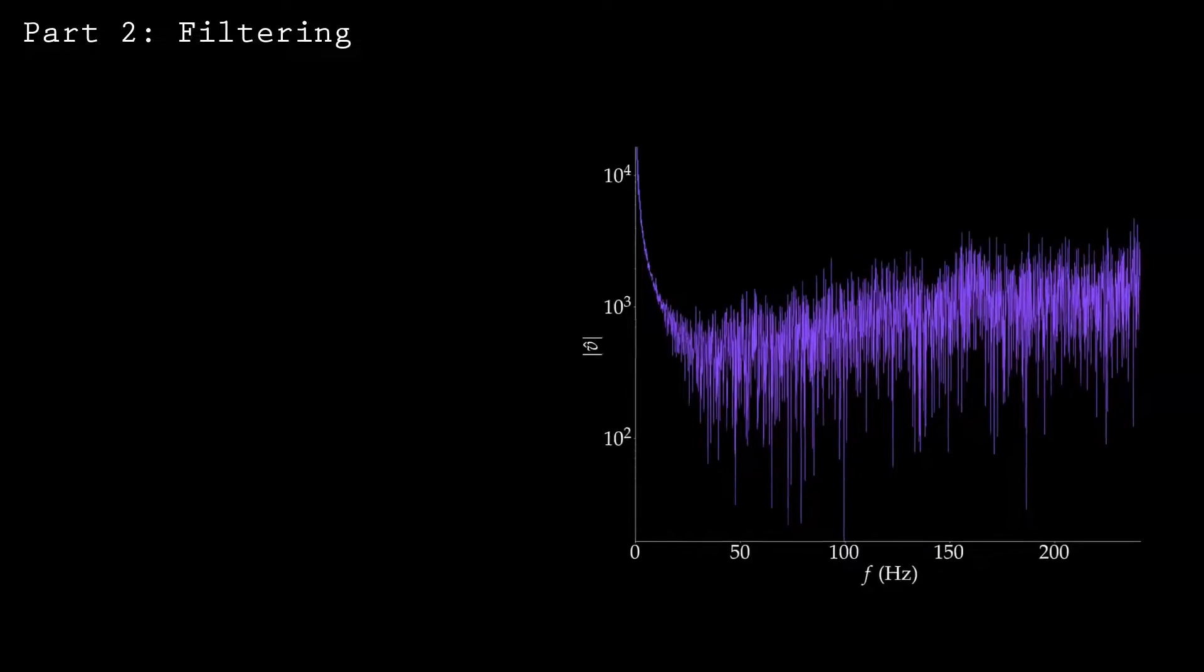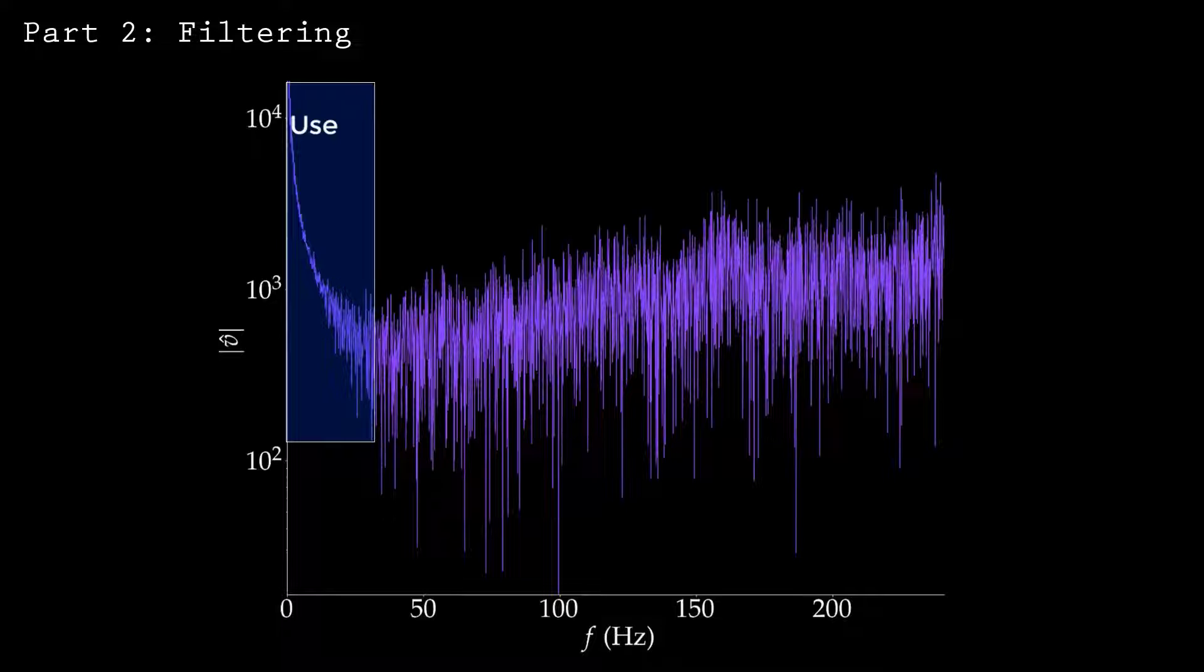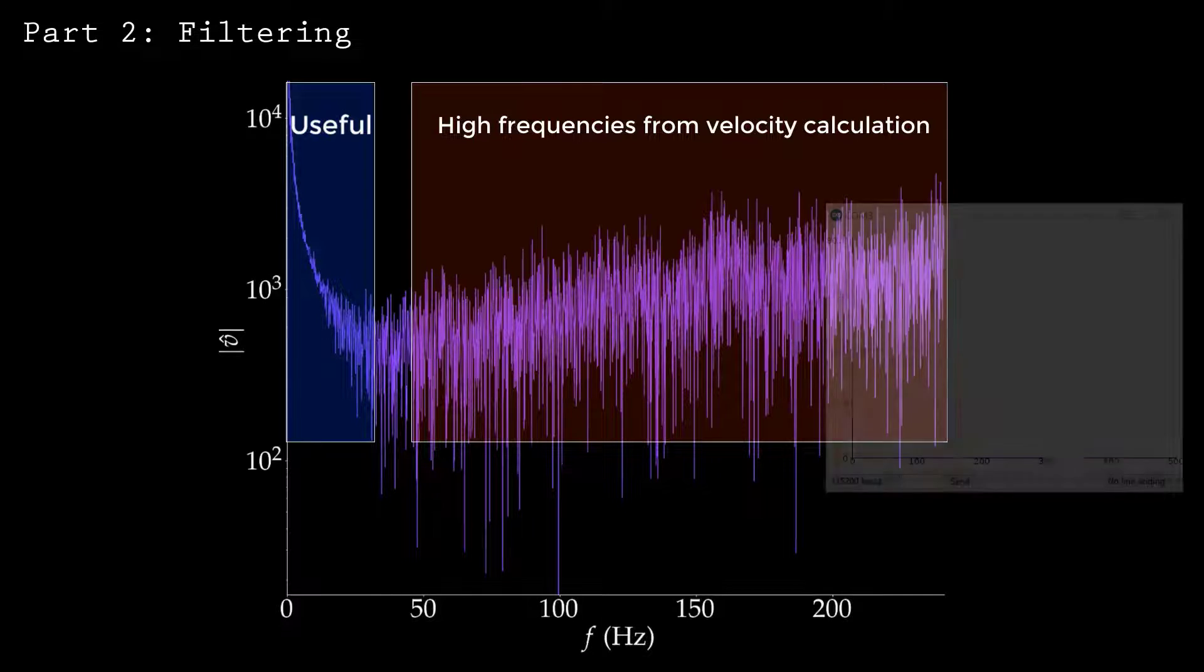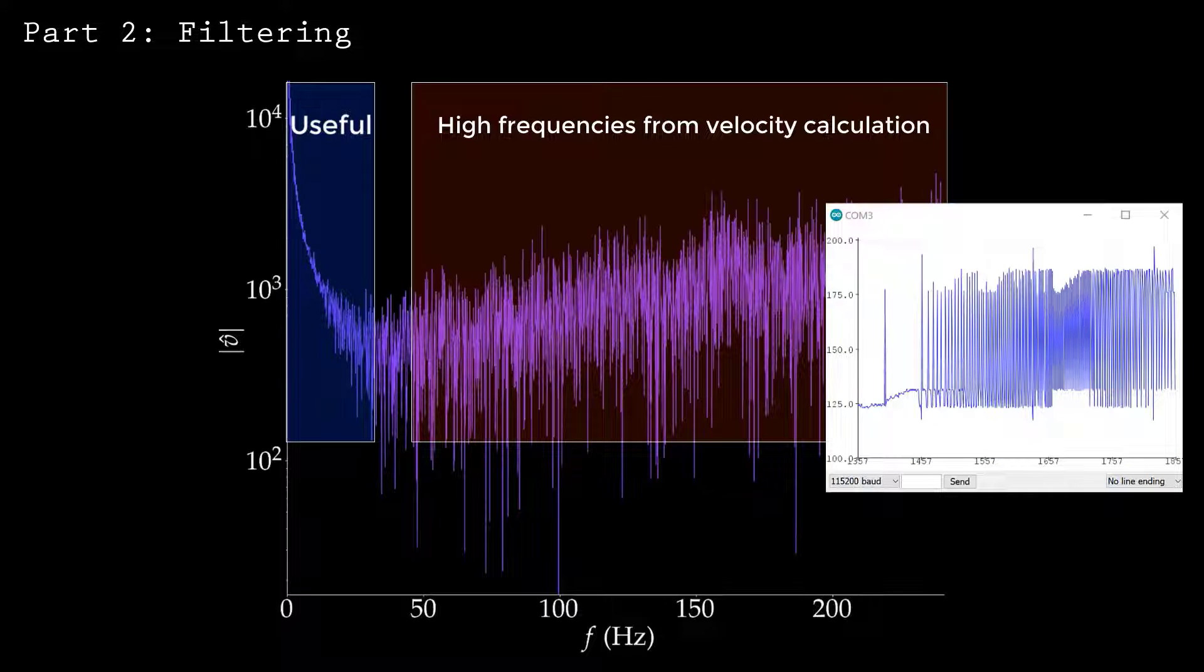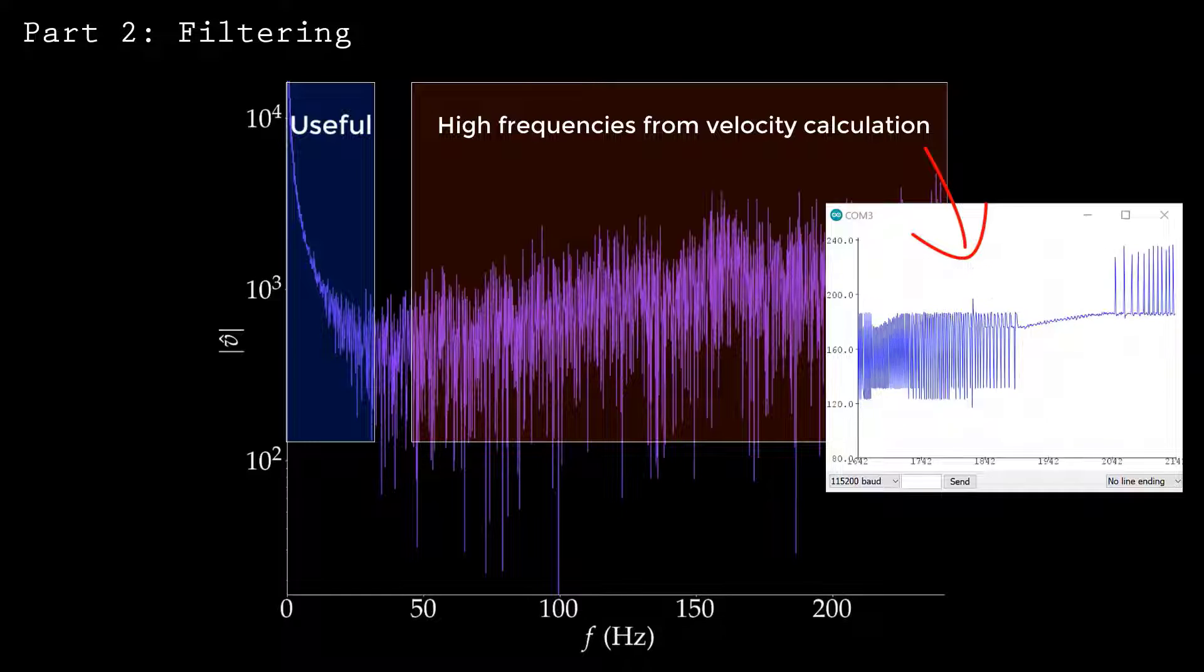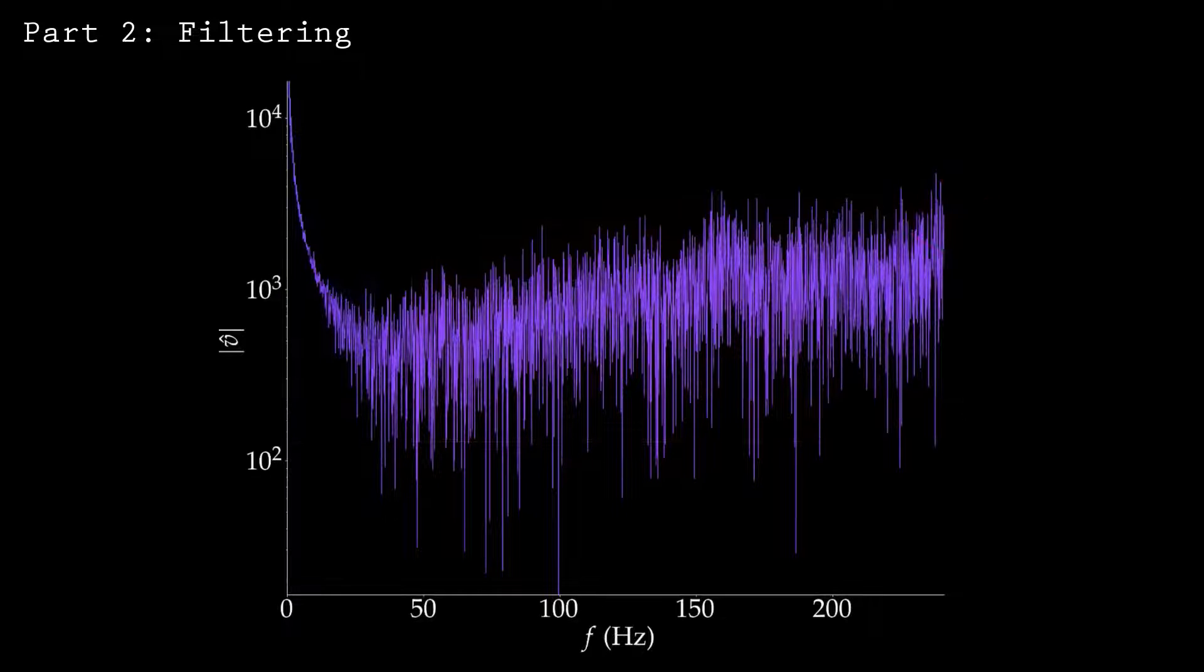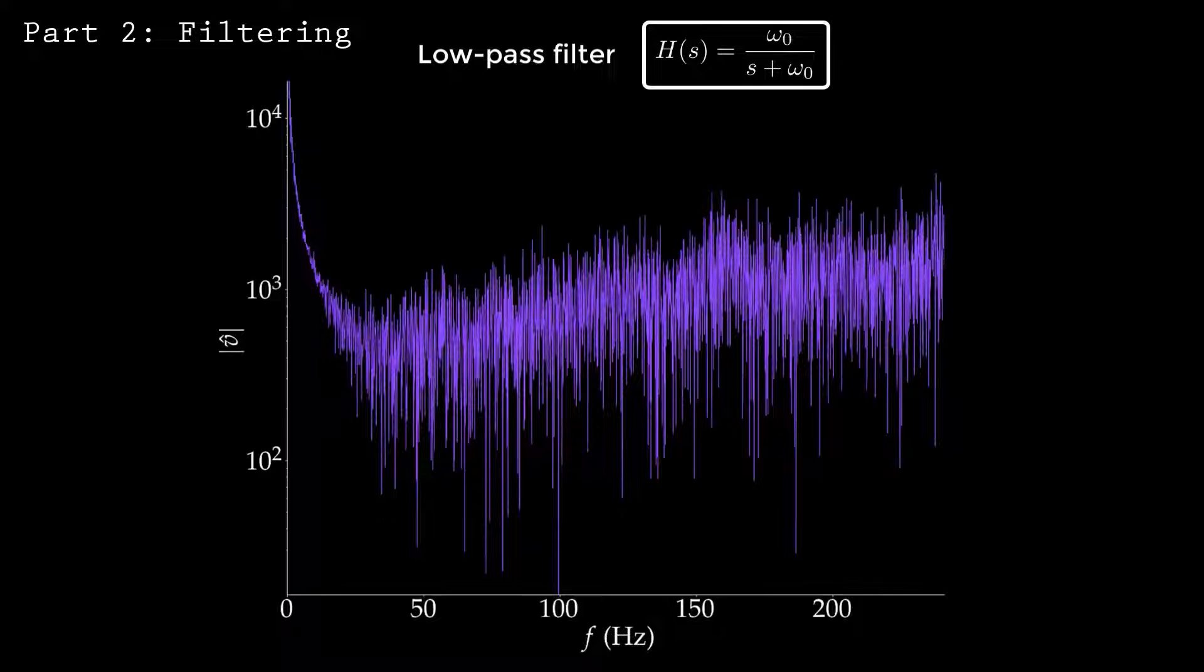Another way to think about this is in the frequency domain. Here, I've computed the power spectrum. Frequencies below 30 Hz contain useful measurements. You can see that there's also a substantial amount of high-frequency content. This is primarily due to the measurement switching between discrete levels as the speed increases.